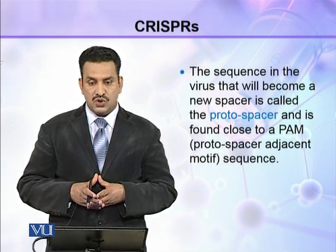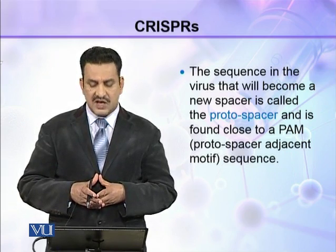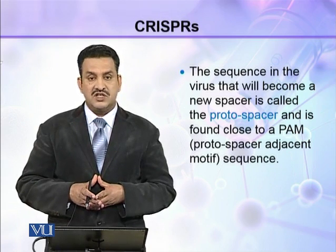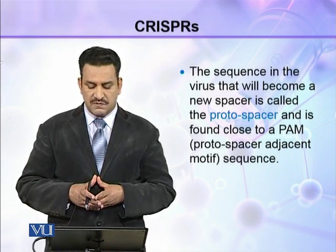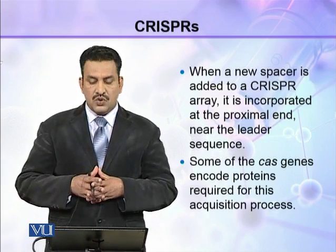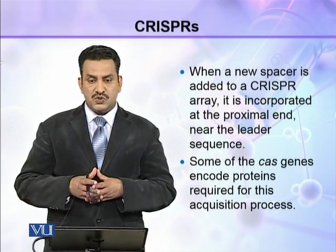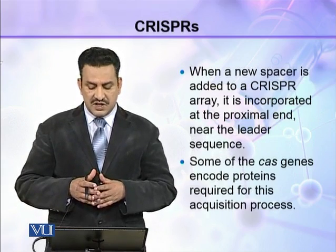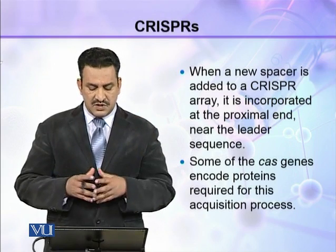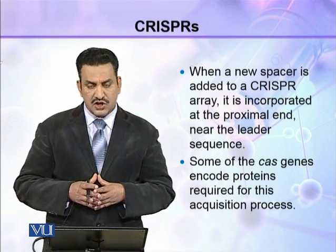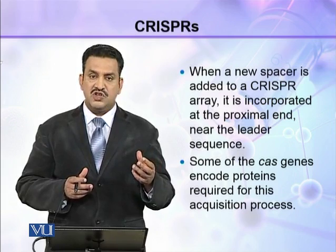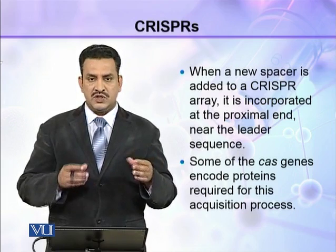The sequence in the virus that will become a new spacer is called the protospacer and is found close to a PAM, meaning the protospacer adjacent motif sequence. When a new spacer is added to a CRISPR array, it is incorporated at the proximal end near the leader sequence.